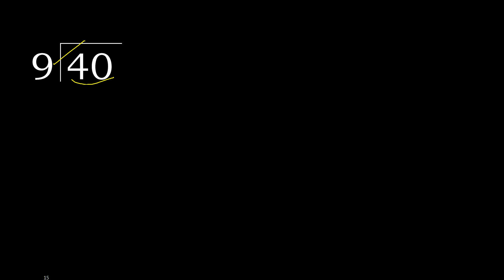9 multiplied by which number is nearest to 40 but not greater? 9 multiplied by 5 is greater. Multiply by 4: 36, which is not greater. 40 minus 36 is 4.